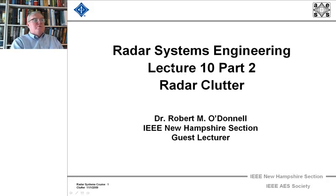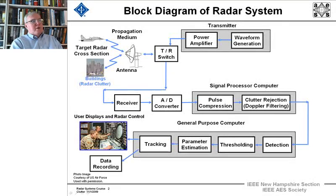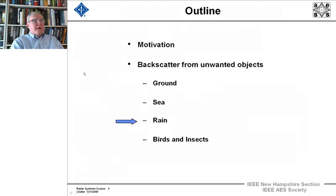Now we're going on to Part 2 of Lecture 10 on Radar Clutter. Here's the block diagram of the radar. You remember that clutter is backscatter from unwanted objects — not the target — but from things like buildings, sea clutter. In this section, Part 2, we're going to focus on rain and on backscatter from birds and insects also.